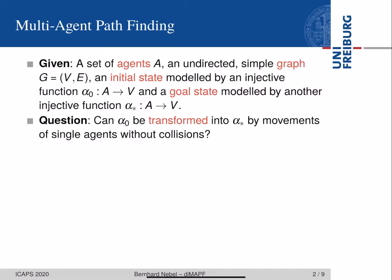I believe that most of you know what multi-agent pathfinding is, but let me just repeat a formal definition of this problem. We have a set of agents A, an undirected simple graph G with vertices V and edges E, an initial state modeled by an injective function alpha-zero that maps agents to vertices, and a goal state modeled by another injective function alpha-star. The question is: can alpha-zero be transformed into alpha-star by movements of single agents without collisions?